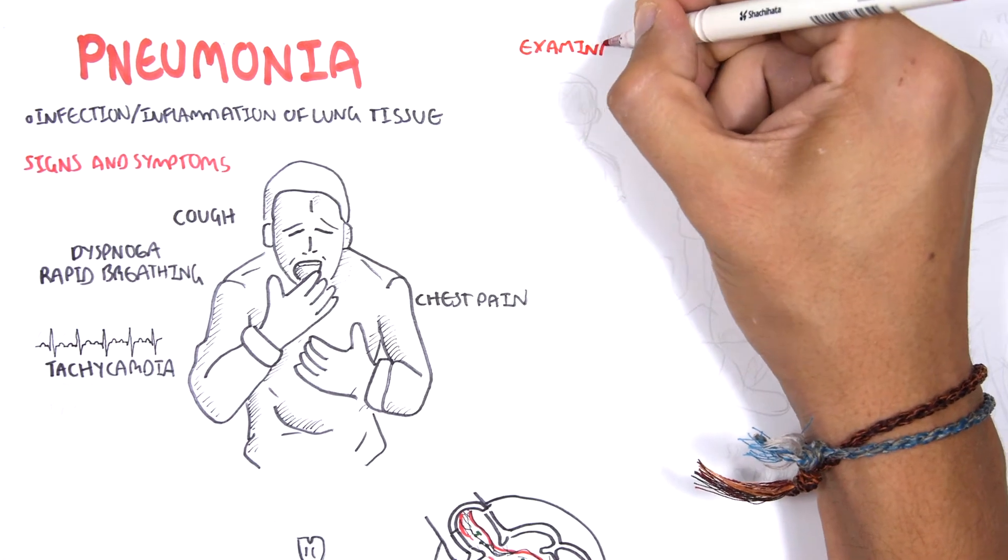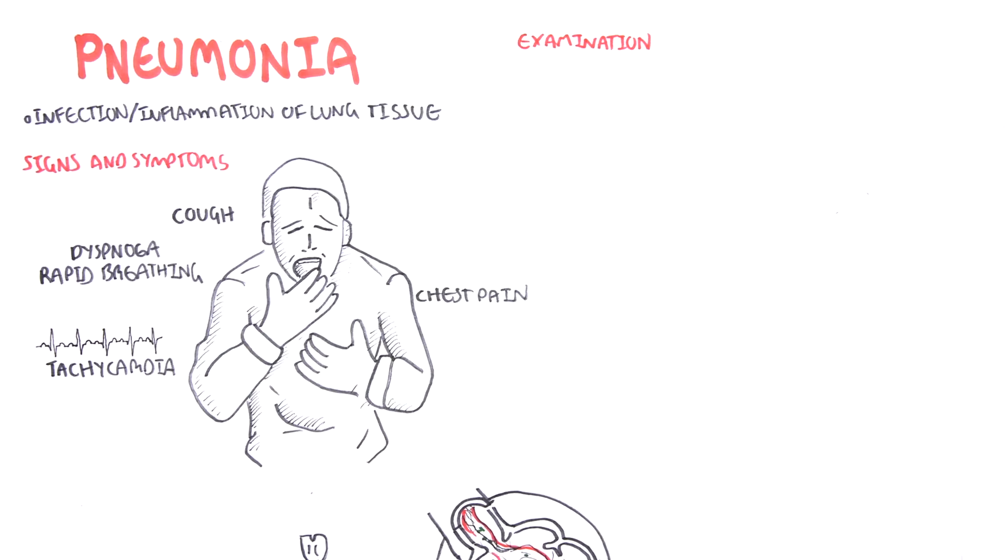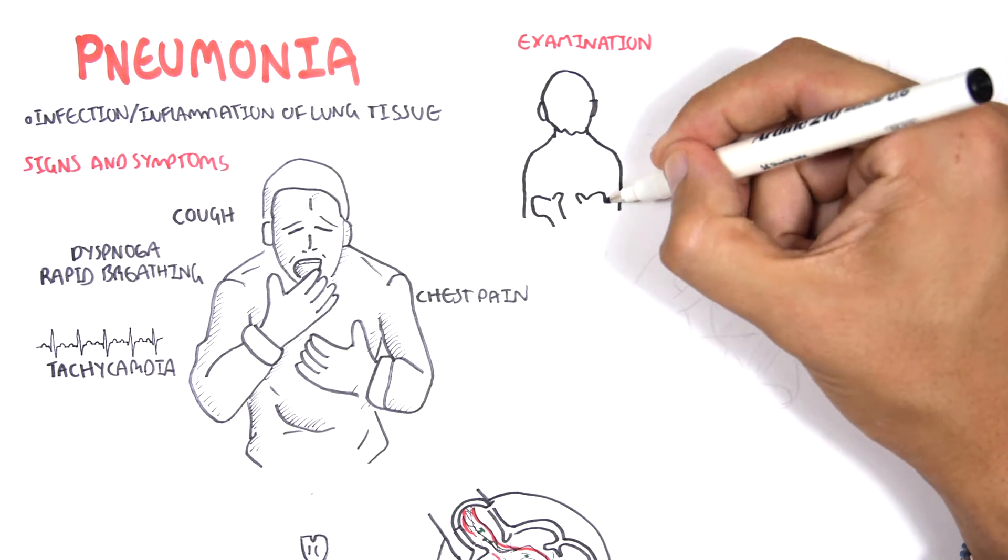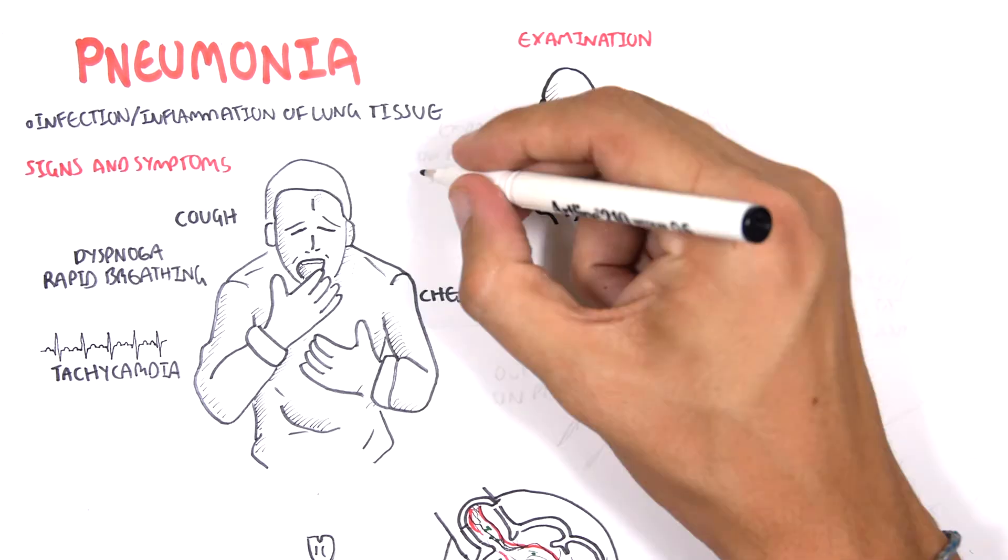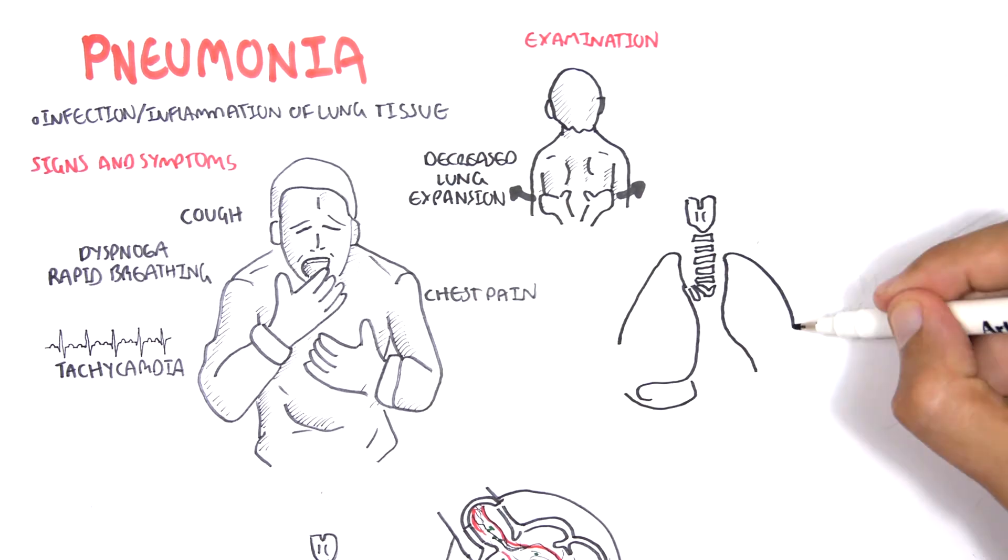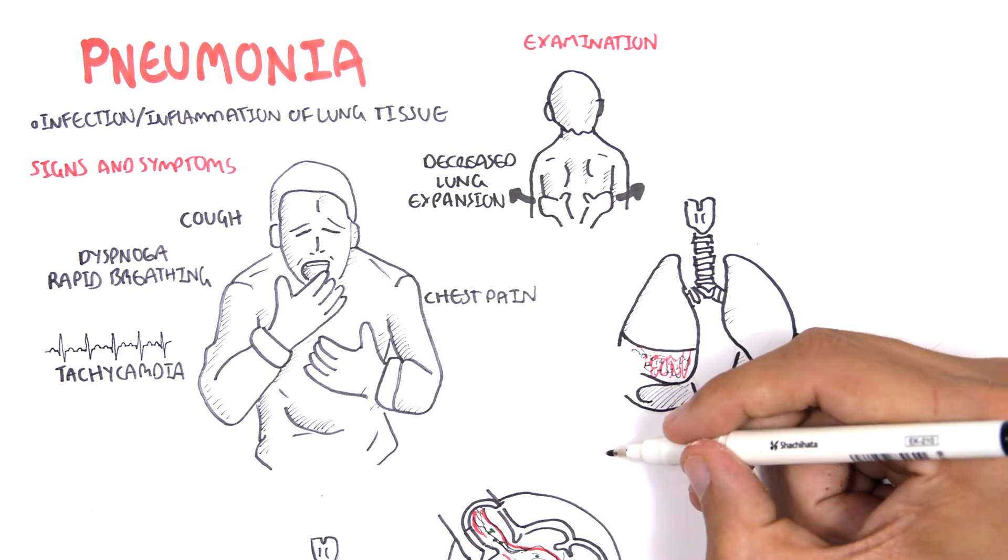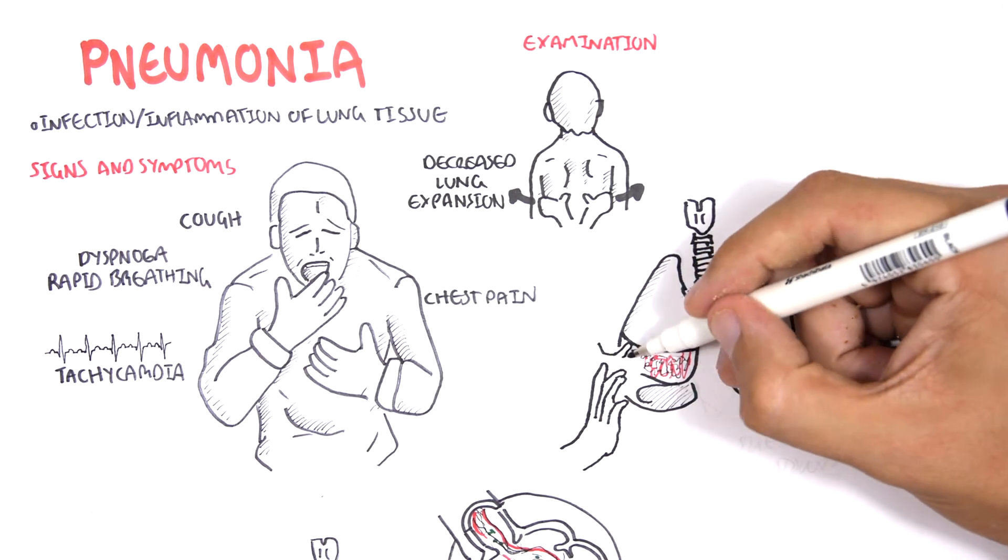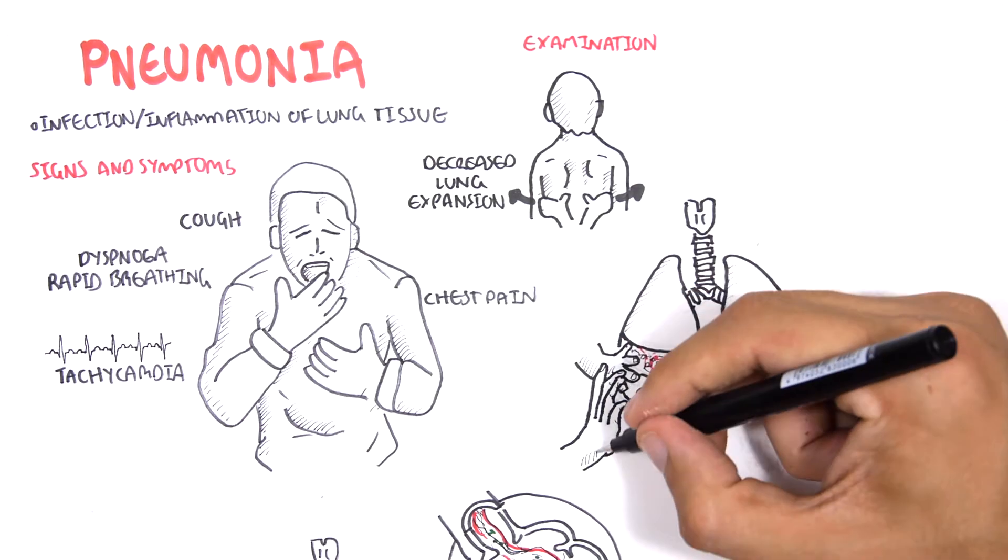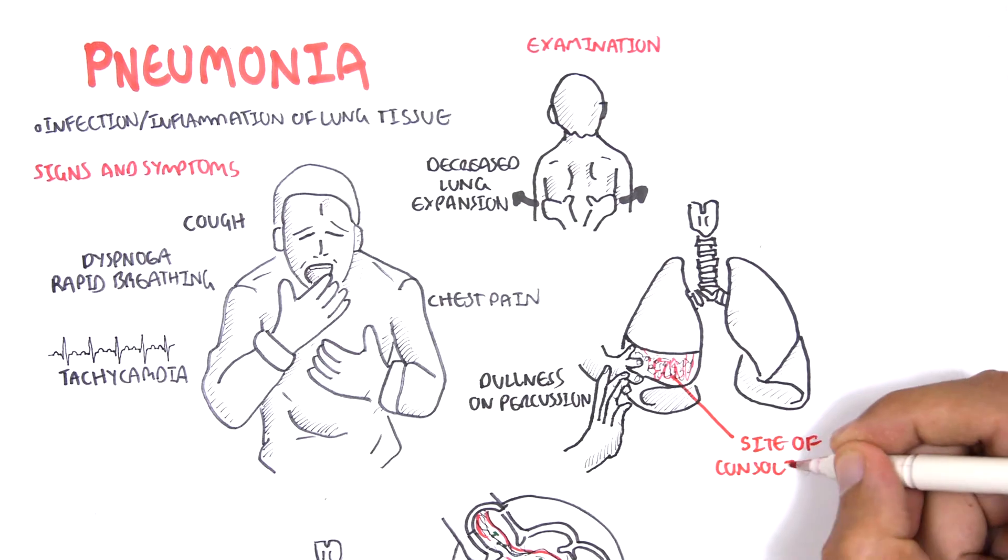We learned about the signs and symptoms of pneumonia. What would we find during examination? We find a decreased lung expansion on the affected side. We have dullness on percussion on the affected lung or lobe of the lung. We also hear crackles or rails on auscultation.